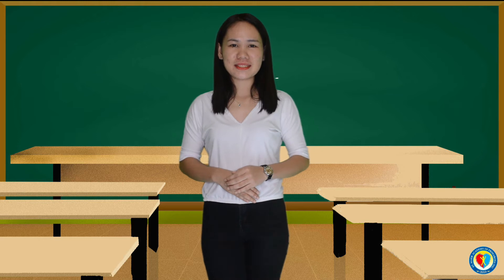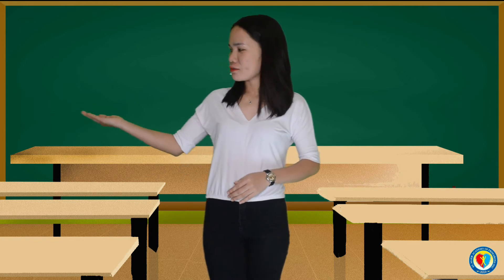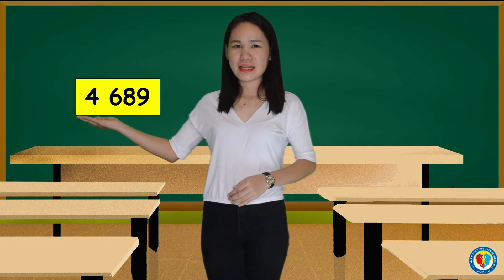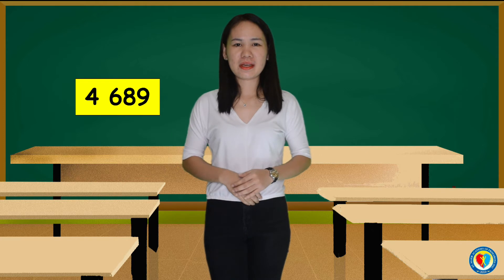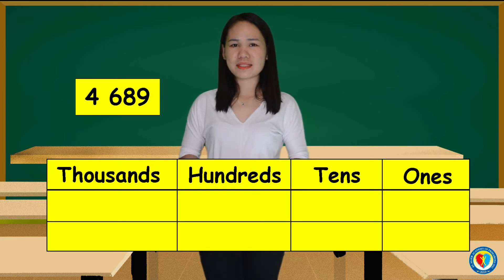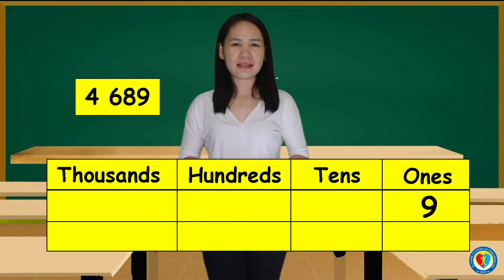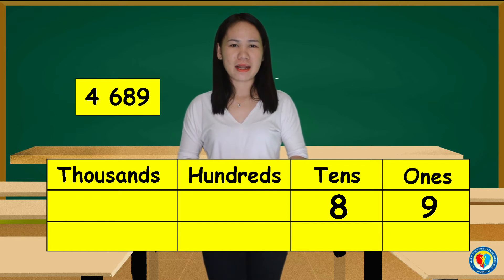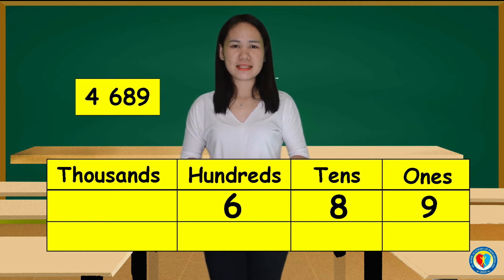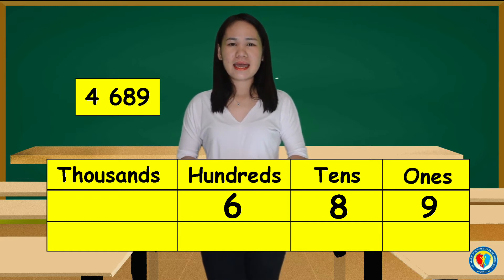Let us understand this with the help of a number. Let us take the number 4,689. We write the number 4,689 in the place value chart as: number 9 in the ones place, number 8 in the tens place, number 6 in the hundreds place, and number 4 in the thousands place.